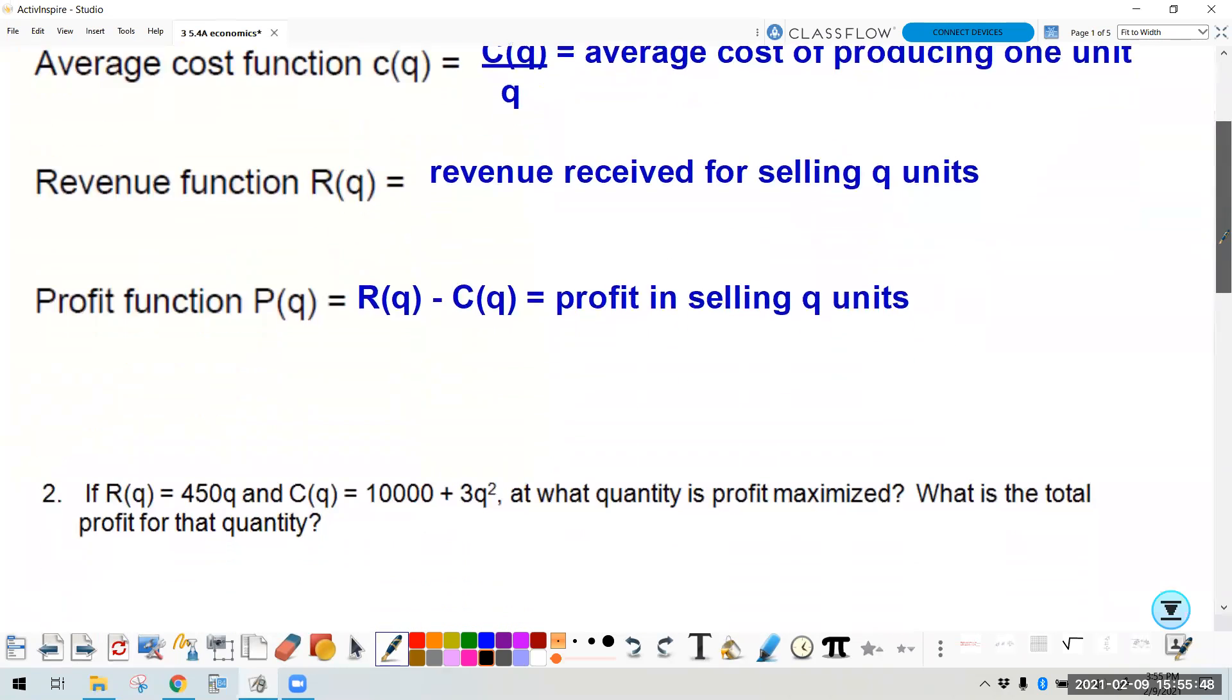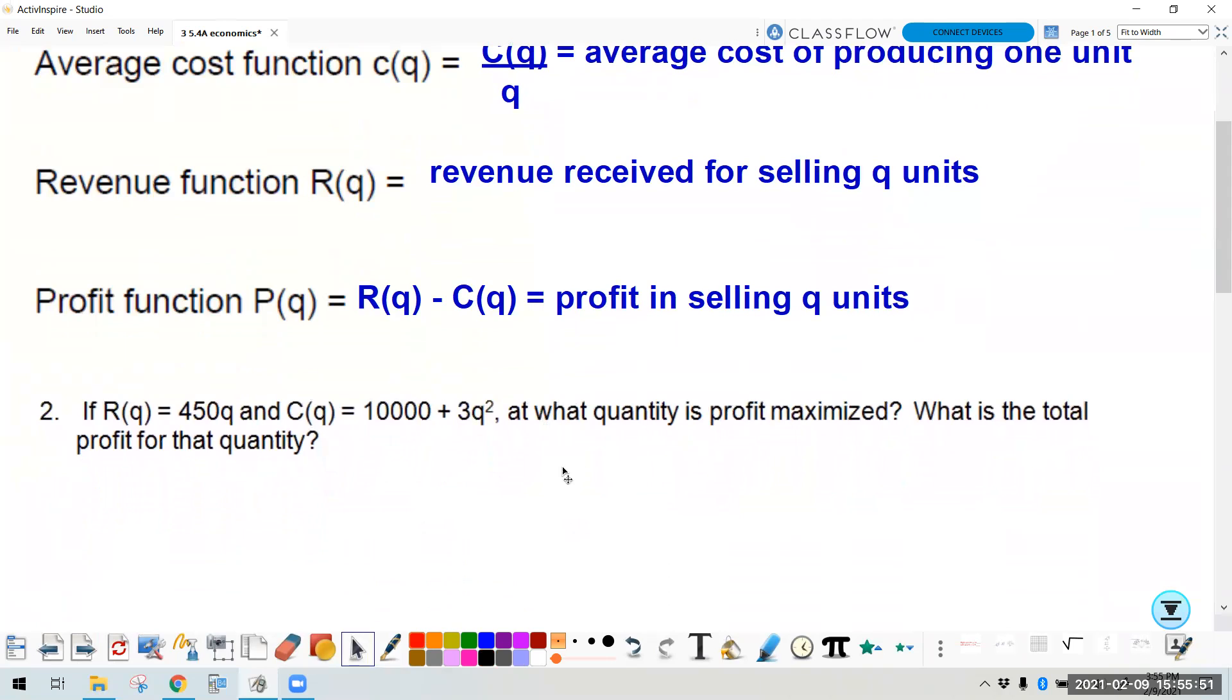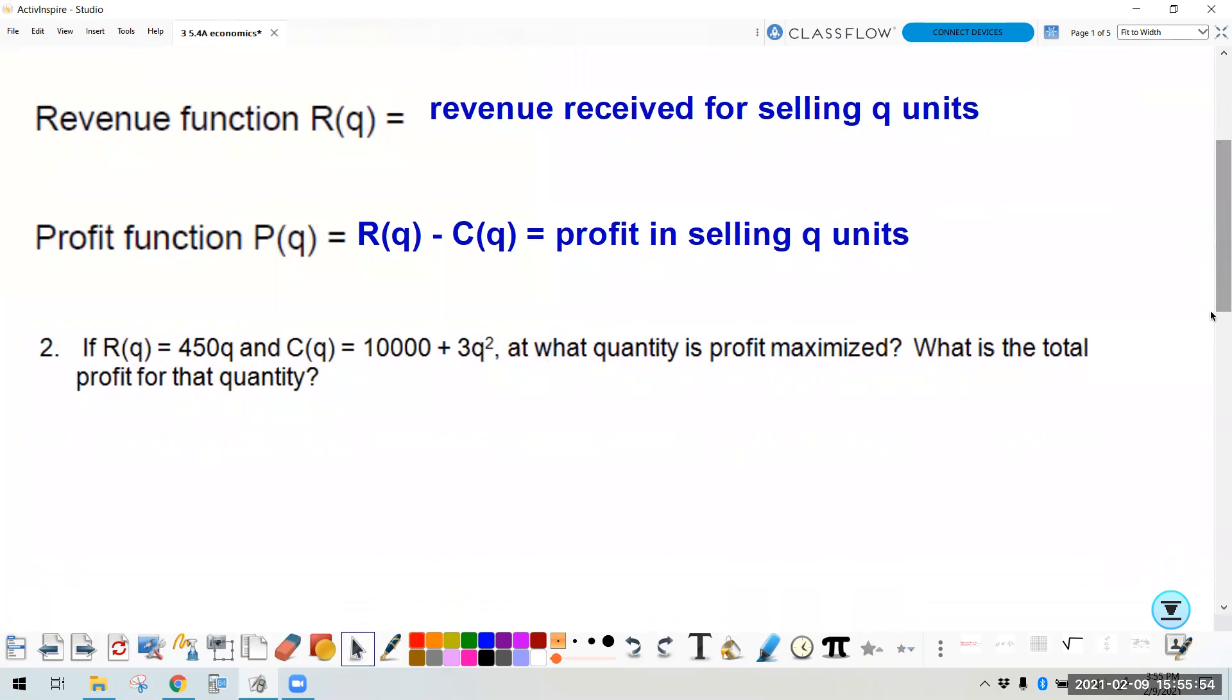Alright, so back to number two here, it says, given the revenue and the cost, what quantity is profit maximized? What is the total profit? So the first thing we have to do is find a profit equation. So profit is the revenue function minus the cost function. And these parentheses are important because you have to distribute the negative. So our profit equation is 450Q minus 1000 minus 3Q squared.